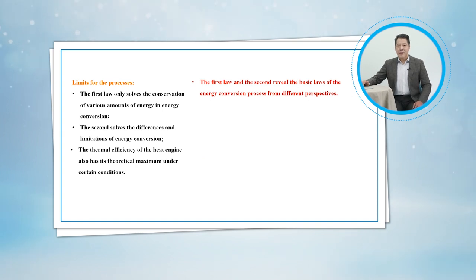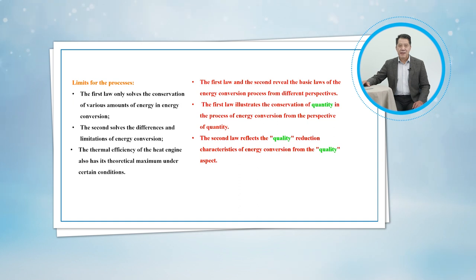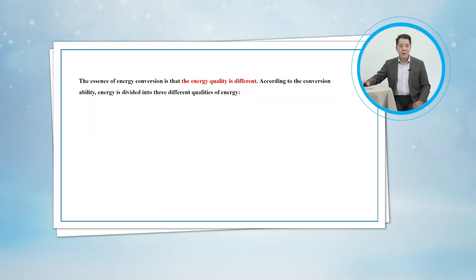The first and the second laws reveal the basic laws of the energy conversion process from different perspectives. The first law illustrates the conservation of quantity in the process of energy conversion from the perspective of quantity. The second law reflects the quality reduction characteristics of energy conversion from the quality aspect. The essence of energy conversion is that the energy quality is different.